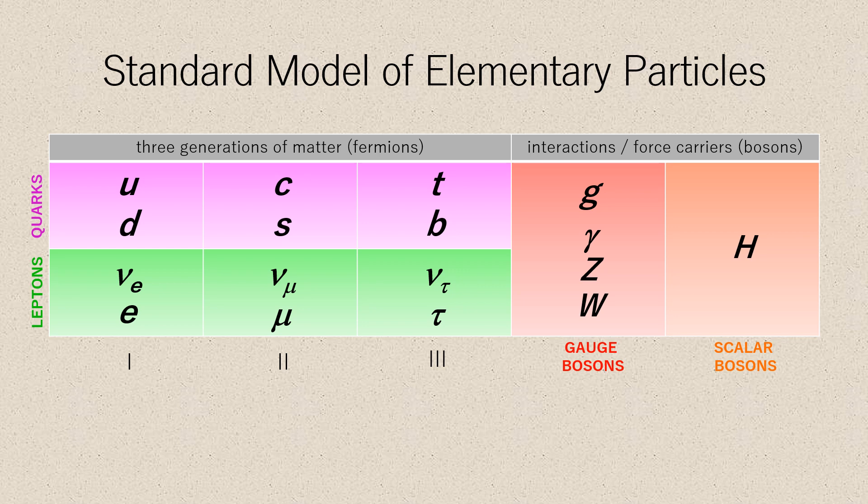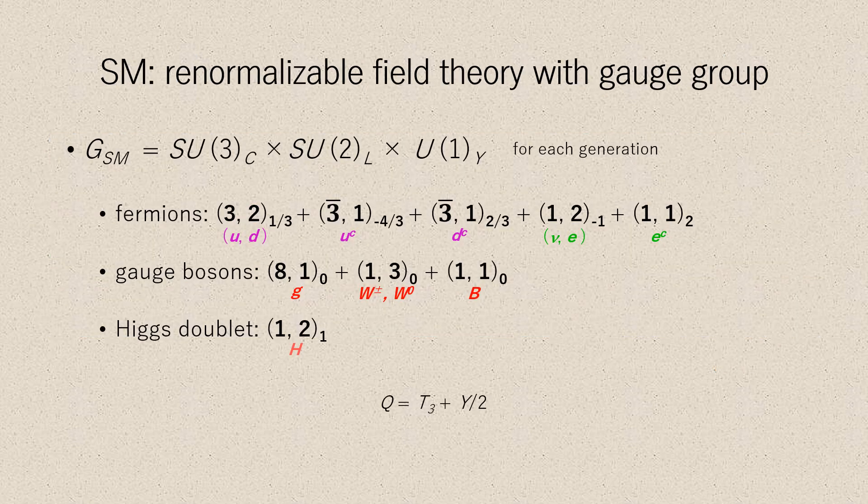The Higgs particle is a massive scalar elementary particle theorized by Peter Higgs in 1964. It has no intrinsic spin, and for that reason is classified as a boson, like the gauge bosons, which have integer spin. The Higgs boson plays a unique role in the standard model by explaining why the other elementary particles, except the photon and gluon, are massive.